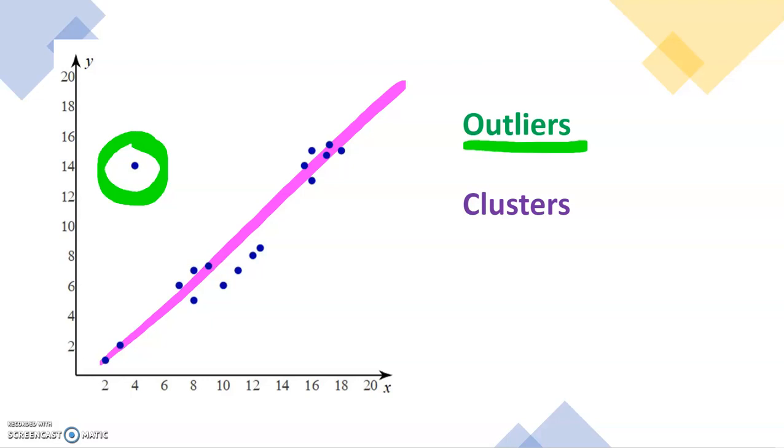It's an anomaly. If we have a closer look at all the points, we can see they exist in three distinct groups and these are called clusters.